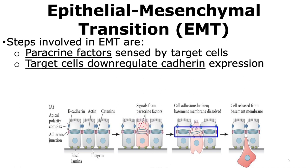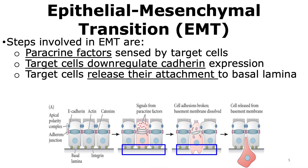The result of these signal transduction events is that the target cells start down-regulating the cell adhesion protein cadherins. Since the down-regulation of cadherin expression occurs, the cell shown in the middle is going to lose its attachments with its neighboring cells. The target cells also release the attachment they have with the basal lamina, and the proteins involved in interacting with the basal lamina are also down-regulated in the cell undergoing epithelial mesenchymal transition.